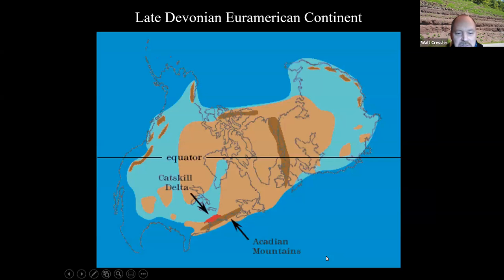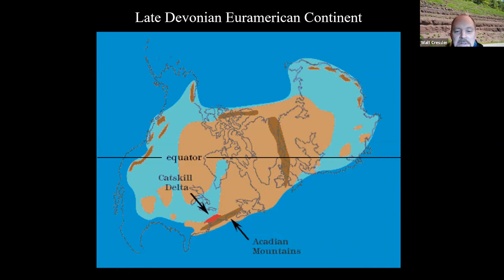This diagram shows where the Catskill Delta and Red Hill are located with outlines of contemporary continents. Gondwanaland would be down to the lower right corner, approaching when they come together for the final Appalachian Orogeny — the Allegheny Orogeny — and the forming of Pangaea.